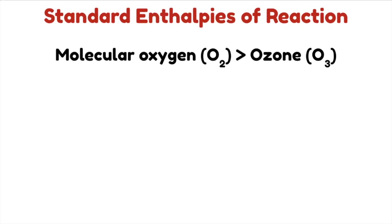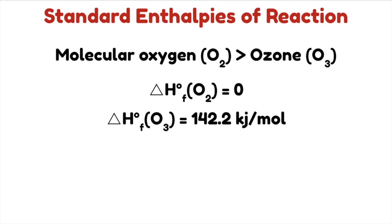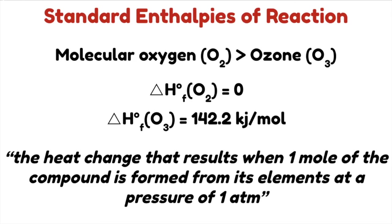Molecular oxygen O₂ is more stable than its allotropic form ozone O₃. At 1 atm and 25°C, the standard enthalpy of O₂ is zero, but the standard enthalpy of ozone is +142.2 kJ/mol. Based on this reference for elements, the standard enthalpy of formation of a compound is the heat change that results when one mole of the compound is formed from its elements at 1 atm. Once we know these values, we can readily calculate the standard enthalpy of reaction.